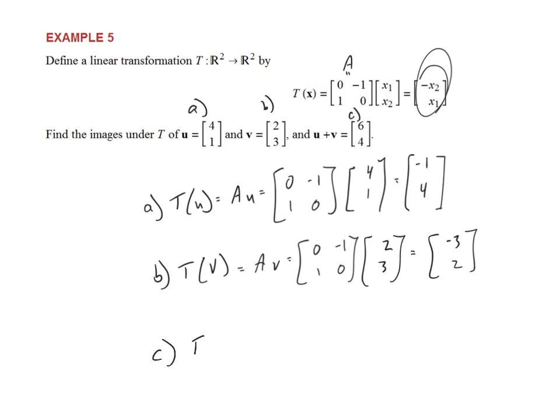Lastly, part c, we are going to find the transformation of u plus v, which we are given. The sum of the two vectors, check the math there, is 6, 4. But if I multiply matrix a, 0, negative 1, 1, 0, times 6, 4, you should get negative 4 and 6 as your two entries. And if you check negative 1 and negative 3 is negative 4, 4 plus 2 is 6. So that just shows that this transformation is linear in a specific case, whereas the previous example was a more general proof of why that transformation, the dilation, was linear.